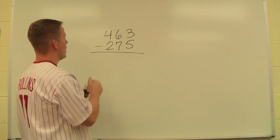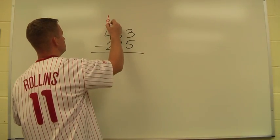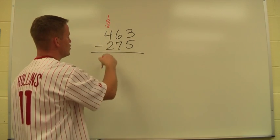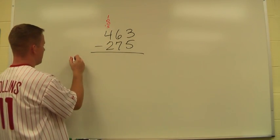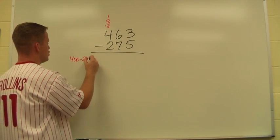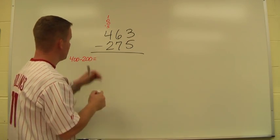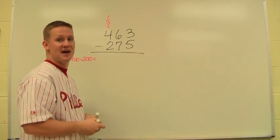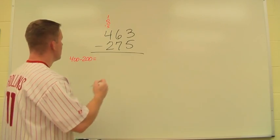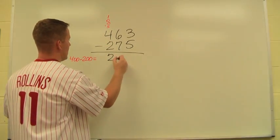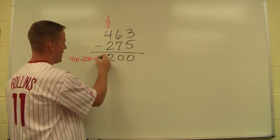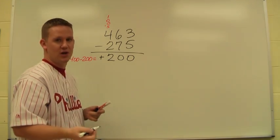So I start with my hundreds column. I have 400 minus 200. So over here, I think to myself, 400 minus 200. Now since the 4 was on top, the larger number was on top, which is what we're used to in subtraction, I'm going to keep that as 200. We can think of it as positive 200 or plus 200.